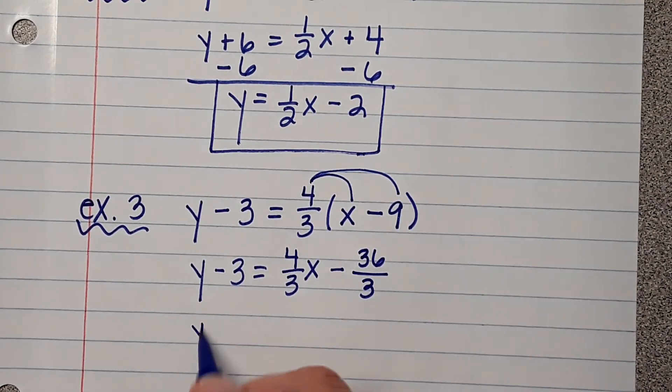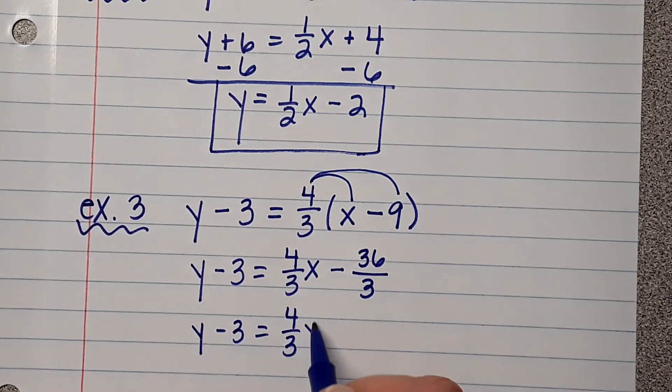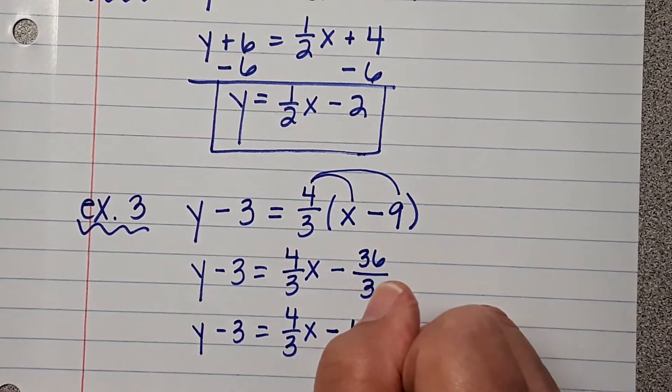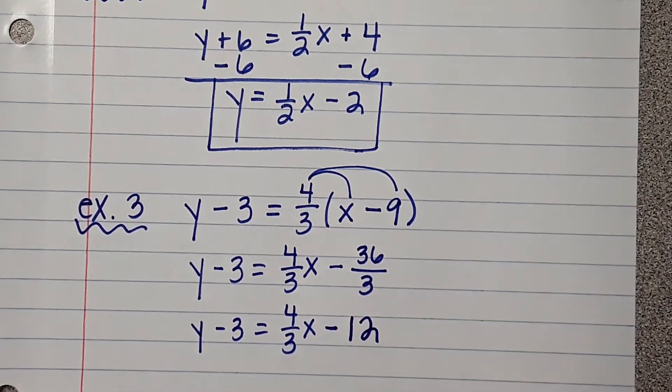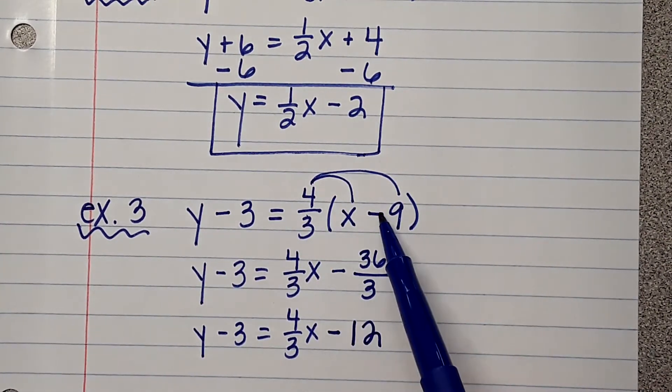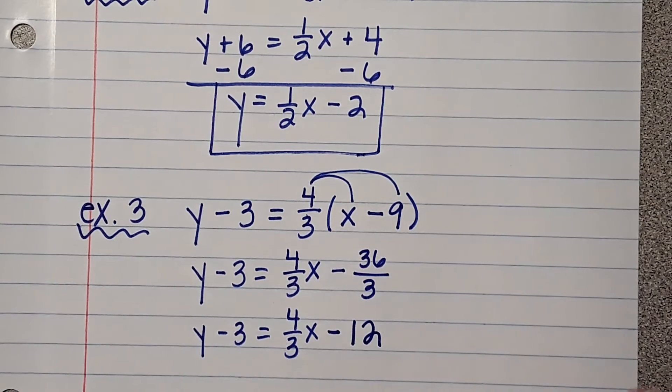Okay. Well, Y minus 3 equals 4 thirds X. 36 divided by 3 is 12. Okay. Remember, you guys, the reason that this is negative is because I did a positive times a negative. That's how I got the negative.